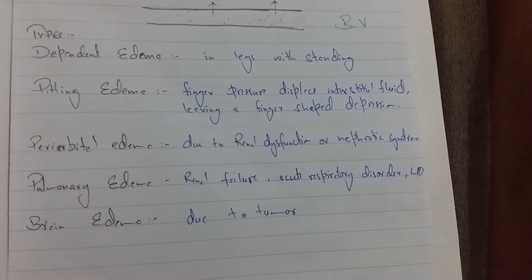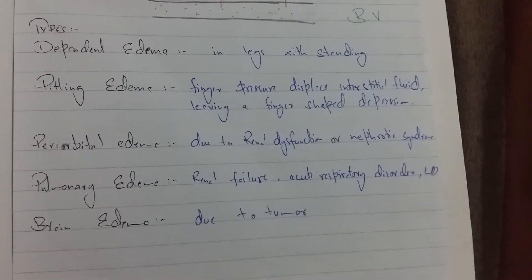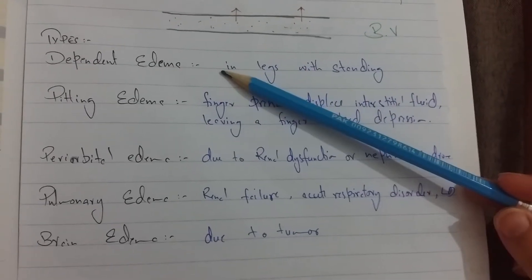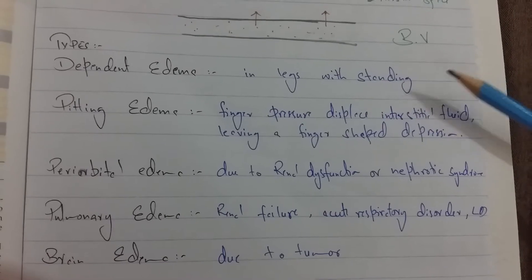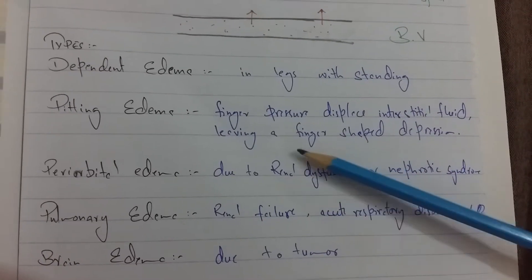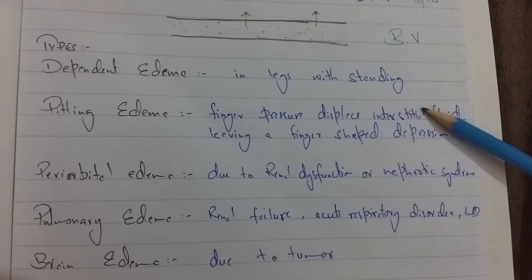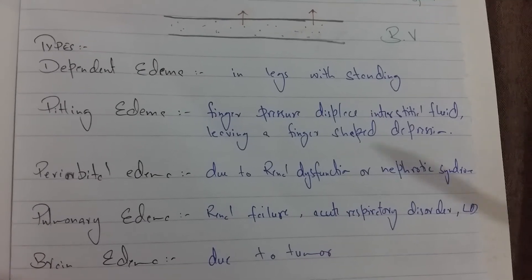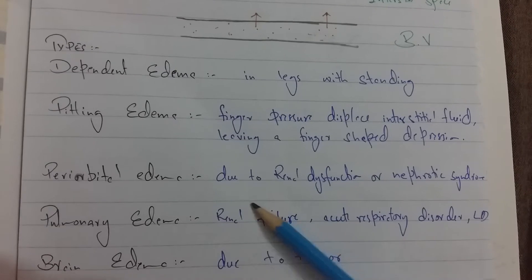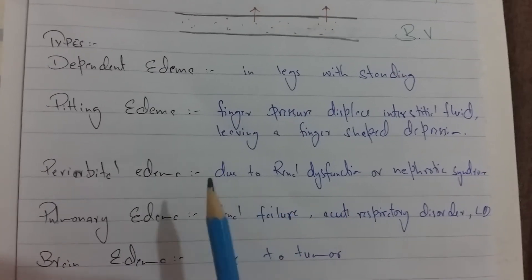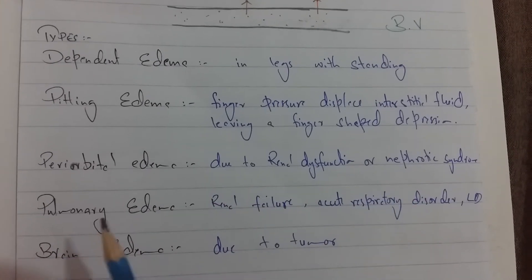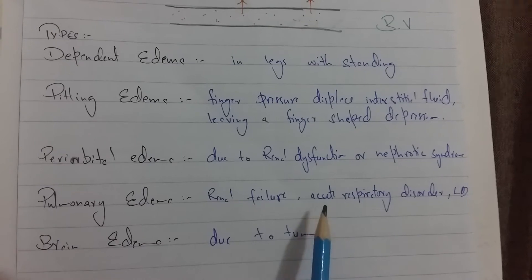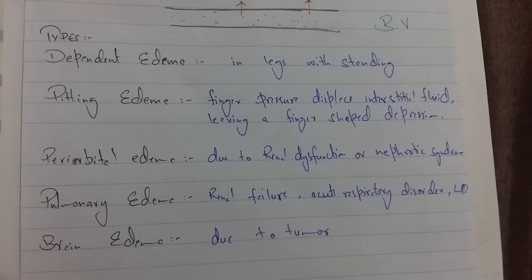These are the types of edema. Edema is common in the legs, foot, and ankle, but it can appear in the whole body. Dependent edema is common in the legs with standing. The other type is pitting edema — finger pressure displaces the interstitial fluid, and when the finger is removed, a finger-shaped depression remains in that area. Periorbital edema occurs due to renal dysfunction or nephrotic syndrome. Pulmonary edema is common in renal failure, acute respiratory disorder, or lung disorders. Brain edema occurs due to a tumor.